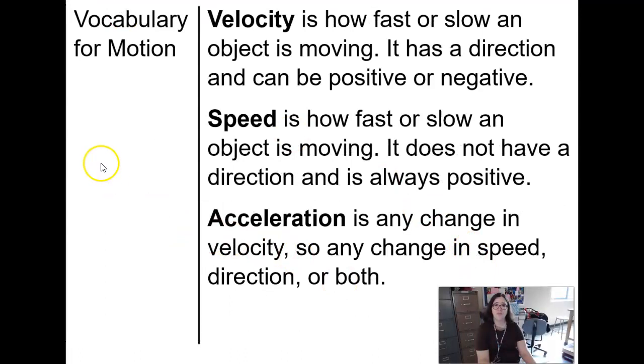Next, we come to velocity. Velocity is how fast or slow an object is moving, but like displacement, it has a direction. Velocity can either be in the positive or the negative direction, so just like displacement, the direction matters.